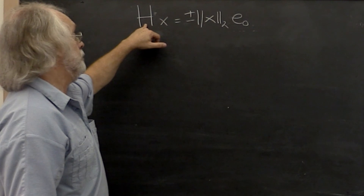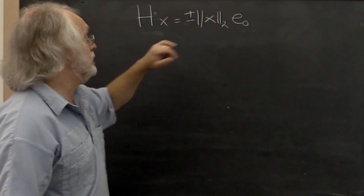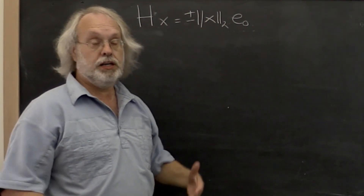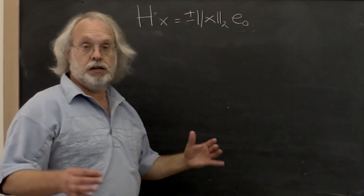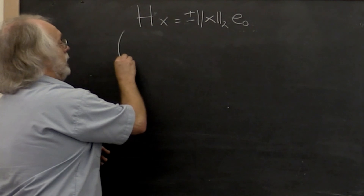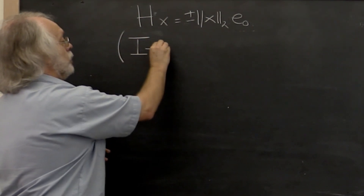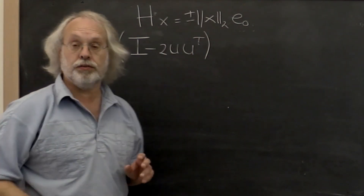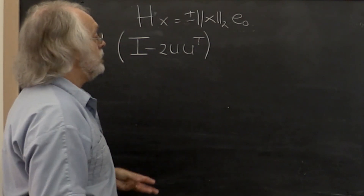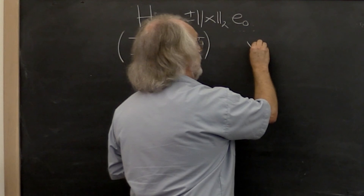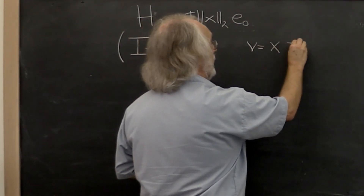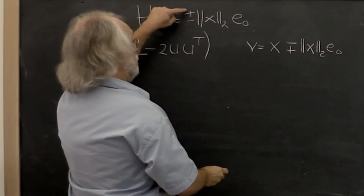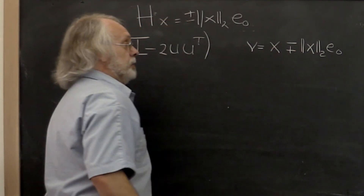We've discussed how to compute a Householder transformation H such that H times x is equal to plus or minus the 2-norm of x times the first standard basis vector. Here we're just talking about the real-valued case for simplicity. We restricted our Householder transform to have the form I minus 2 times u u-transpose. The way to compute this was to set v equal to x minus plus the 2-norm of x times e₀, where if you pick the plus here, you pick a minus there, and vice versa.